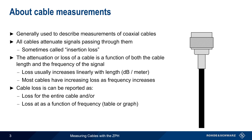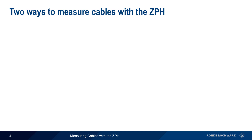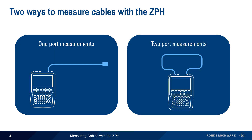Although there are many ways of measuring cables, the most common and most accurate is using an instrument called a Vector Network Analyzer, or VNA. Note that portable or handheld VNAs that are intended primarily for testing cables and antennas in the field are sometimes referred to as cable and antenna analyzers. There are two ways to measure cables with a ZPH cable and antenna analyzer. The first is so-called one-port cable measurements, in which only one end of the cable is connected to the ZPH. The other method is two-port measurements, in which both ends of the cable are connected to the ZPH. We will cover both of these methods in this presentation, starting with one-port measurements.